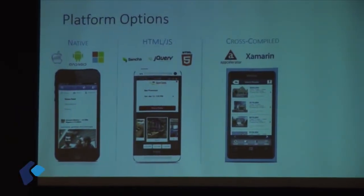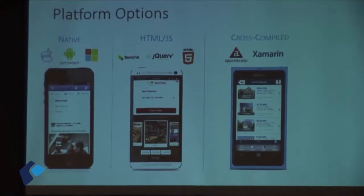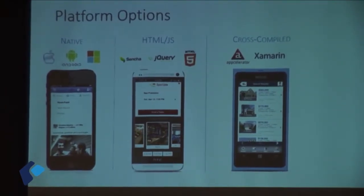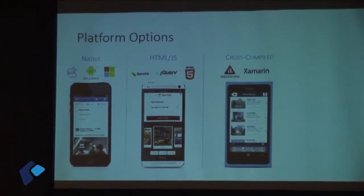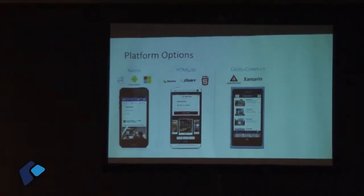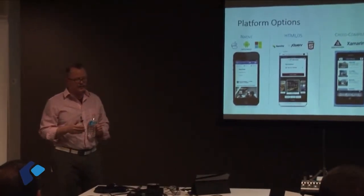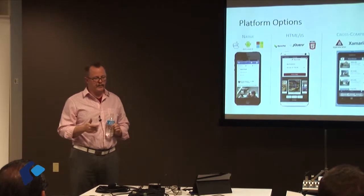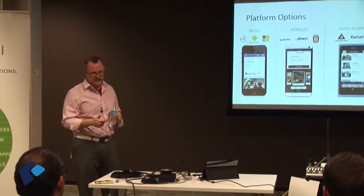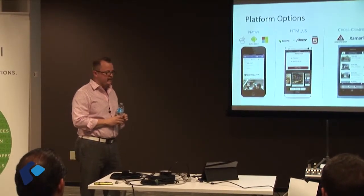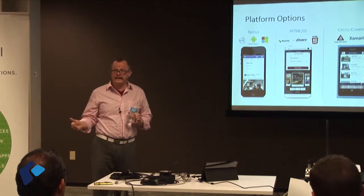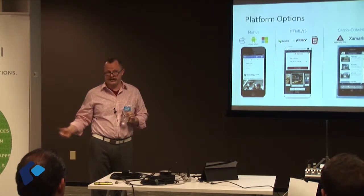First is native, where you actually write code for each specific platform — a completely brand new app for iOS, a completely brand new app for Android, tablets, and Windows. This could also include Blackberry, Symbian, or any of the countless platforms out there. Typically you're required to have the hardware, knowledge in the language those apps are written in, and all the different devices to test on.